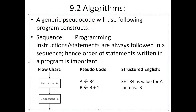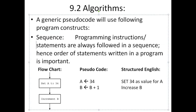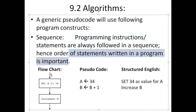A generic algorithm or pseudocode uses the following programming constructs. The first is sequence — programming instructions or statements are always followed in a sequence. If you don't follow them in order, the results would be disastrous or undesirable. In a flowchart, order is shown using arrows. In pseudocode: 'a ← 34' then 'b ← b + 1'. In structured English — a simple description of how to solve a problem using very basic English — you write: 'set 34 as the value of a, then increase b'.